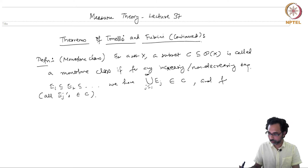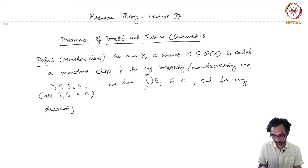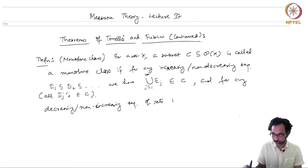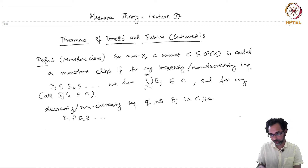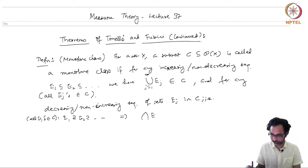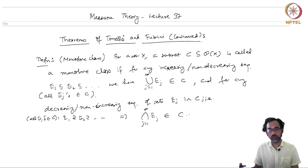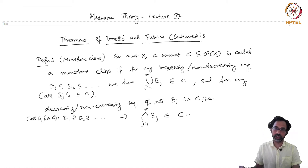Similarly, for any decreasing or non-increasing sequence of sets Eⱼ in C, meaning E₁ ⊇ E₂ ⊇ ..., where all Eⱼ's are in C, this implies that the intersection of these Eⱼ's also belongs to C. So a monotone class is closed under unions of non-decreasing sets and closed under intersections of non-increasing sets, where we only take countable intersections and unions.